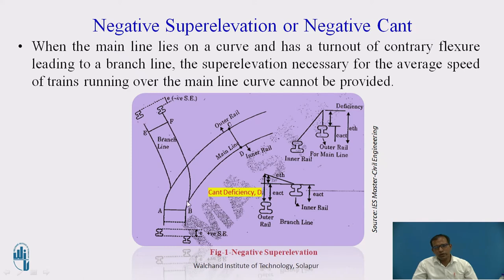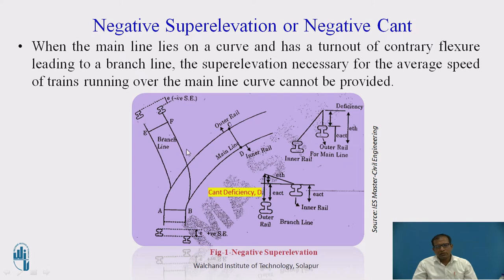To overcome this issue, where one rail is higher and one rail is lower — particularly for the branch line — we get a conflict because the inner rail of the main line (BD) should be lower than AC, but for the branch line it requires B to be higher. So what we do: we provide whatever super elevation is calculated for the main line, and we lower the outer rail of the branch line by the same amount. Lowering the outer rail of the branch line is called negative super elevation.